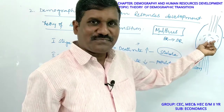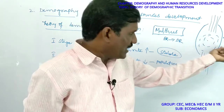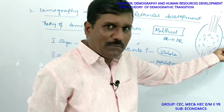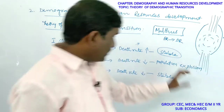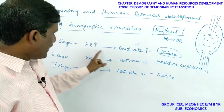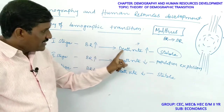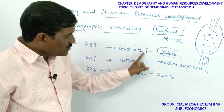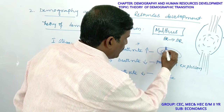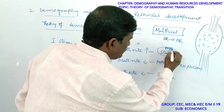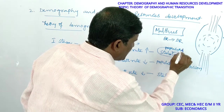In the same manner, birth rate is high and death rate is also very high, so population is stable. The population remains stable in the first stage.